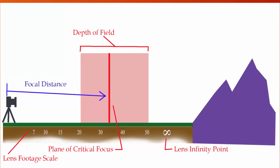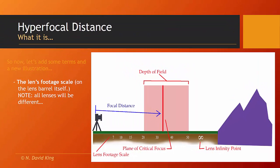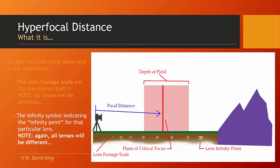Let's take a look at the lens footage scale. This is going to be on the lens barrel itself. In most modern electronic focus lenses it's under a little window, so you don't see the entire scale, only what's showing through the window. But it will have on it the distances in both feet and meters — we'll use feet here — from the point of closest focus for the lens to the infinity point, and beyond that the infinity symbol indicating the infinity point for that particular lens. All lenses are going to be different depending on the focal length, brand, and model.